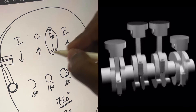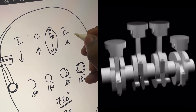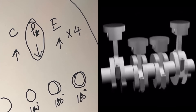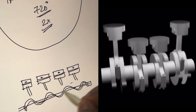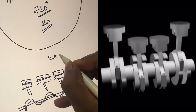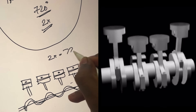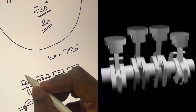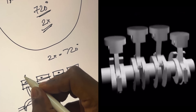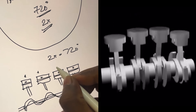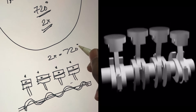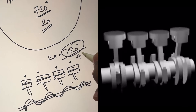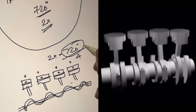Now let's look at a 4-cylinder engine. All 4 cylinders work together. In a 4-cylinder engine, the crankshaft completes 720 degrees, and 4 power strokes are completed. This means in 720 degrees, there are 4 power stroke contributions.